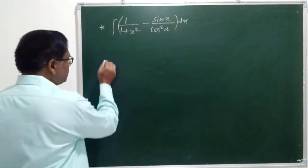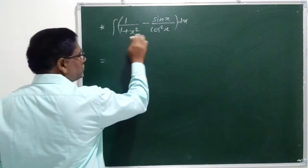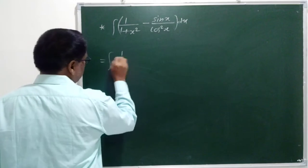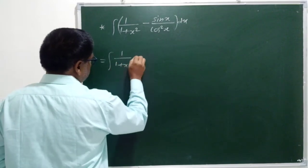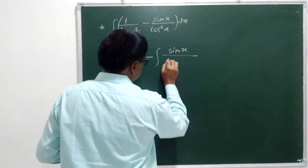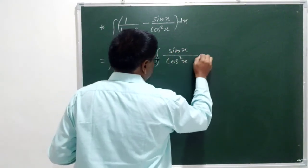Let us solve this problem. This is equal to, let us put these two functions under separate integrals, that is 1 upon 1 plus x square dx minus sin x upon cos square x dx.